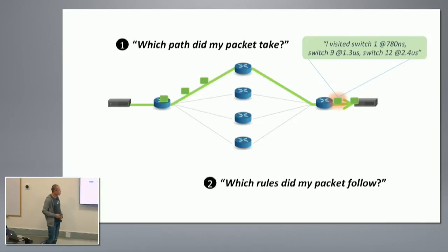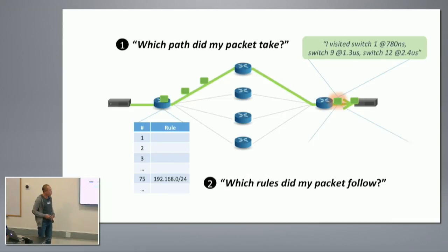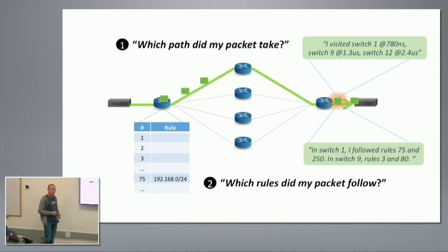The second question: which rules did my packet follow? This is important because you need to make sure your control plane and your data plane are in sync. For example, the packet that was delivered here — which table entries were matched or used for these packets — you need to know about those kinds of things.